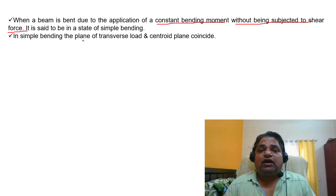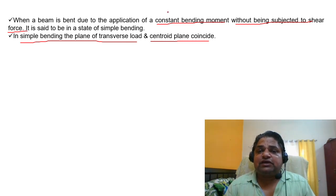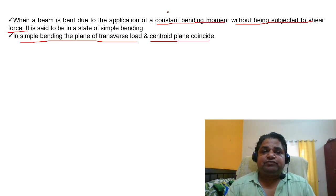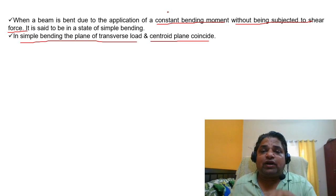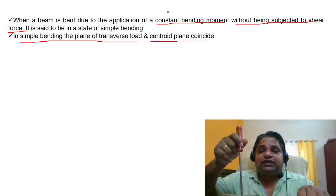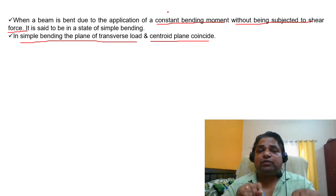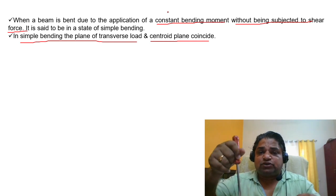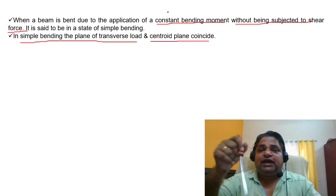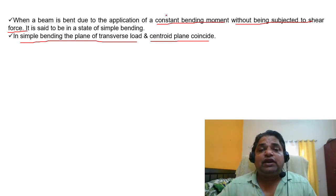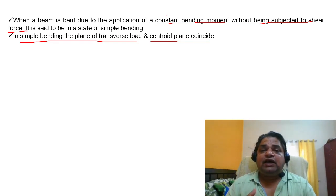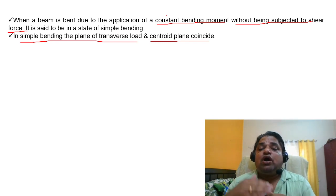The load applied on the beam must transfer to the plane of bending — the plane of the transverse load must coincide with the centroidal plane. There should be no eccentricity between these two planes. Wherever the load is applied and wherever the centroidal plane is, they must coincide. If there is eccentricity — if these two planes do not coincide — then it will not be called simple bending.